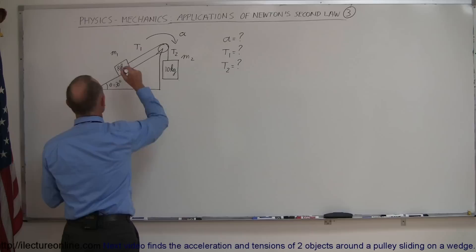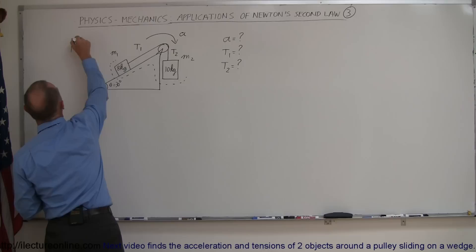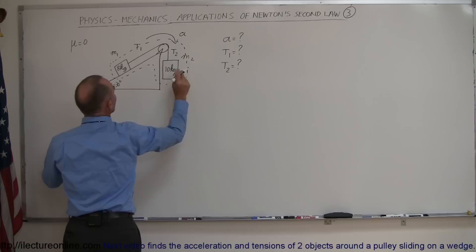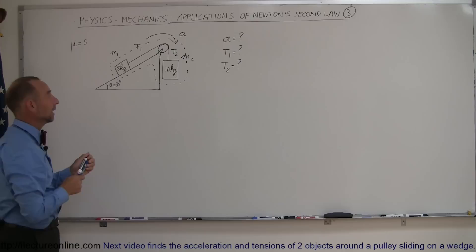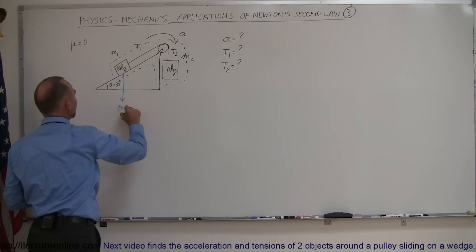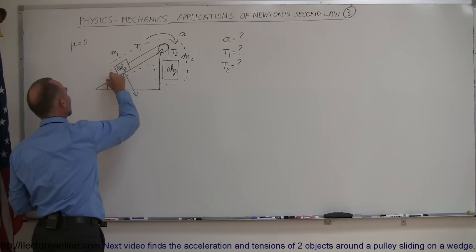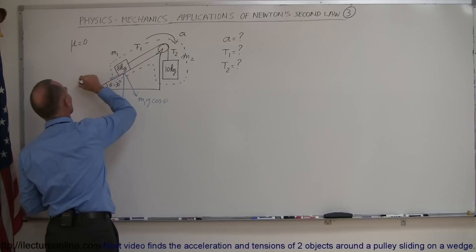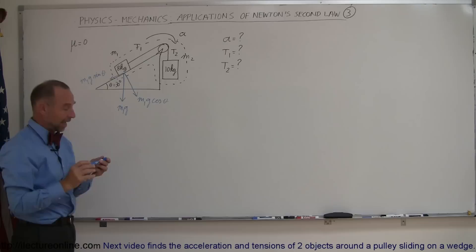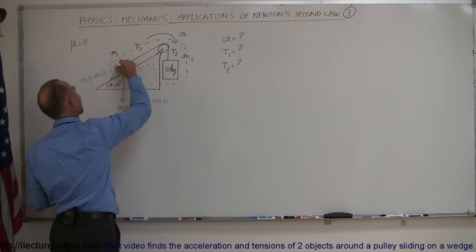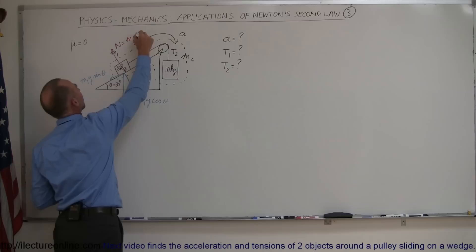We're simply going to find all the forces acting on the whole system. Also note that the friction between the incline and the mass is equal to zero. First, we have the force of gravity pulling down on M1. Since this is on an incline, we draw the perpendicular component and the parallel component. The perpendicular component is M1g cosine theta, and the parallel component is M1g sine theta. The normal force pushes back perpendicular to the incline, equal in magnitude and opposite in direction to M1g cosine theta, so they cancel each other out.